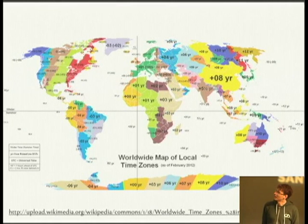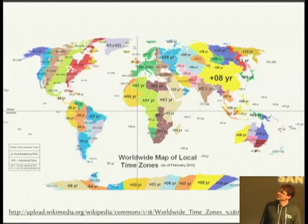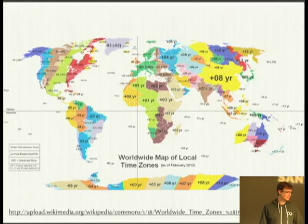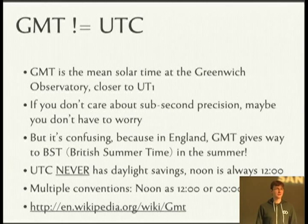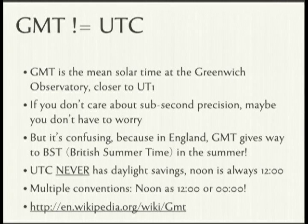There's a map showing all the different time zones as of February 2012. Some places like China do UTC+8 year round. Other places like the West Coast do UTC−8 in the winter and UTC−7 in the summer with daylight savings time. An important point: GMT is not UTC. JavaScript in particular is horrible for this — if you ask it for a UTC timestamp, it says it's in GMT, but those are not the same thing. GMT is the mean solar time at the Greenwich Observatory, which means it's actually closer to UT1.